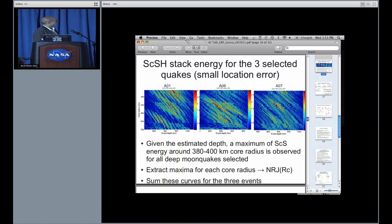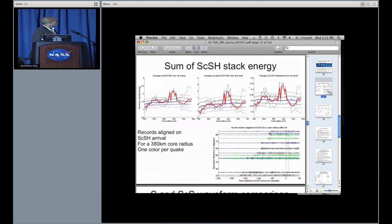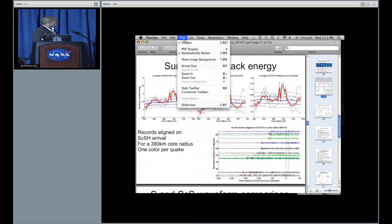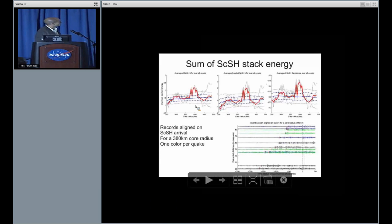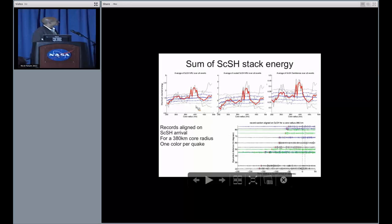What we do is that we extract for each event and each core radius the maximum of these plots in order to create a likelihood function. We obtain this red curve here which presents a peak around, in between 380 and 400 kilometers showing everything aligned on a 380 kilometer radius.